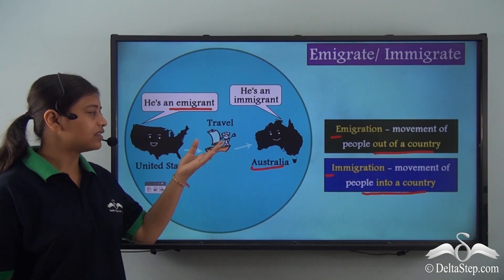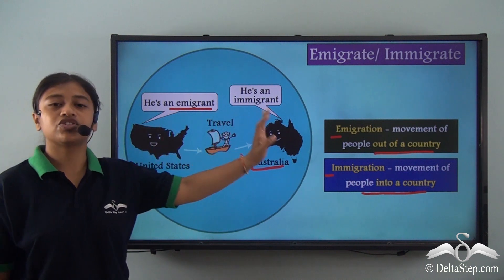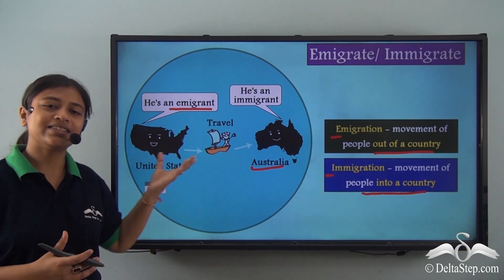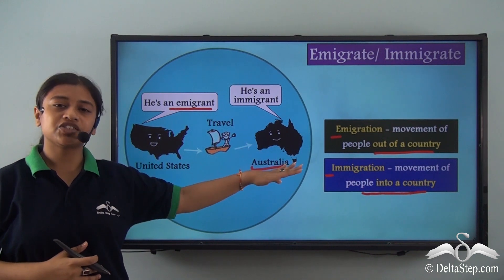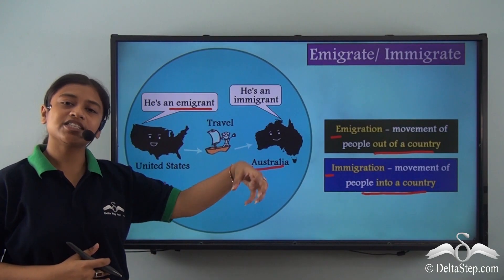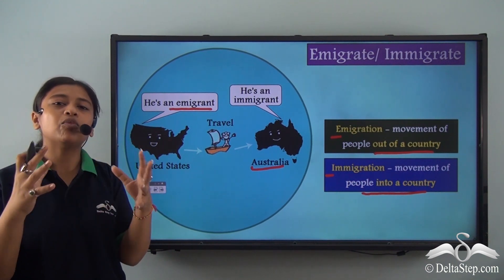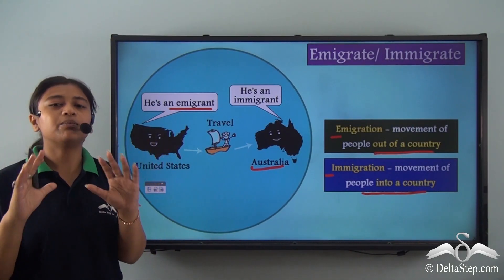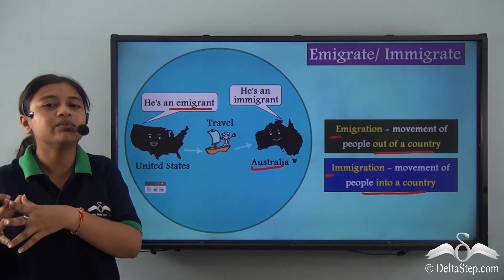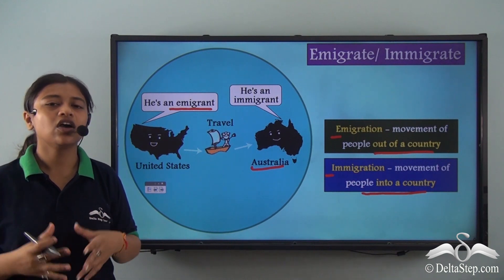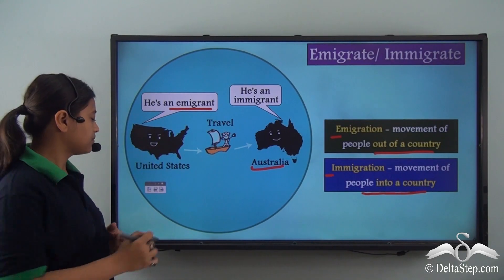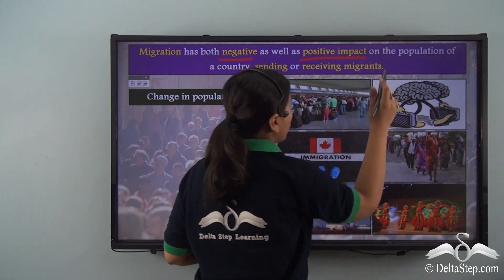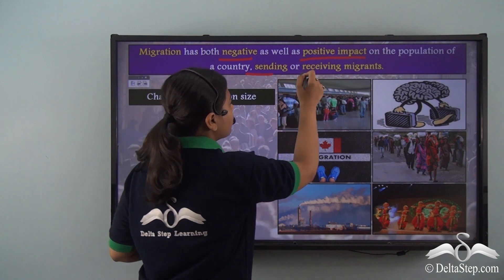If many people migrate from the United States to Australia, it will lead to a change in population for both countries — the sending as well as the receiving country. With the increase in population in Australia, there is more pressure on the resources available, and opportunities become more limited for the native people already residing there because of the immigrants. Migration definitely affects the population of a particular area in terms of resources available and opportunities present.